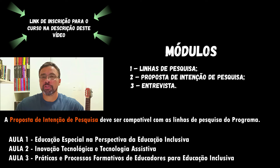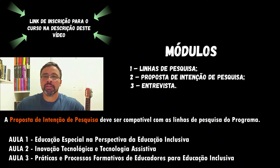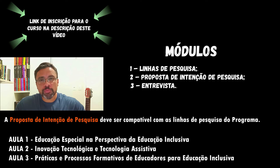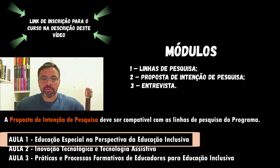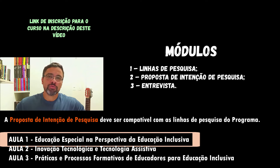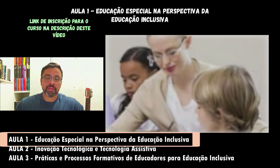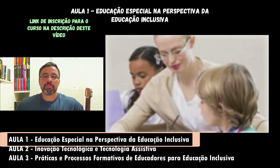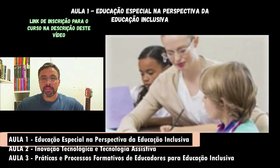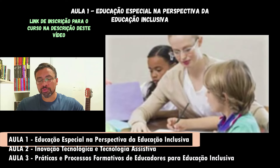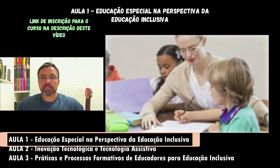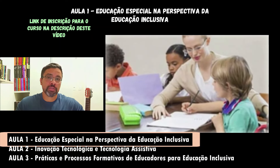Por mais que a nossa proposta esteja bem elaborada, se não estiver coerente com a linha de pesquisa, a possibilidade de não dar certo é muito grande. Então, nesta primeira aula vamos abordar a linha de pesquisa 1: Educação Especial na Perspectiva de Educação Inclusiva. É uma aula em que a gente vai abordar conteúdos de fundamental importância para a escrita da nossa proposta de intenção de pesquisa, já trazendo dicas para a elaboração da nossa proposta.